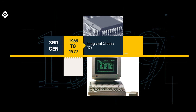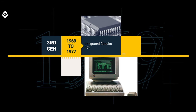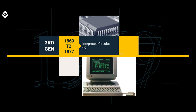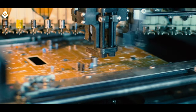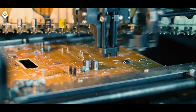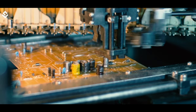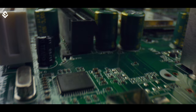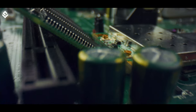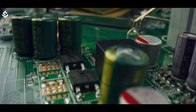The third generation, from 1969 to 1977, started with the use of integrated circuits (ICs). This was the era of microprocessors. The ICs were invented in 1958, and their small sizes and ability to perform complex operations helped their usage in computers. It was possible to place hundreds of ICs in a tiny silicon chip.